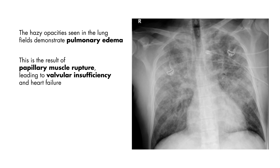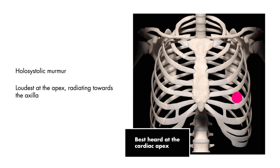Because of this rupture, the valve is not anchored and becomes insufficient. On auscultation of this patient's heart, you will hear a new holosystolic murmur loudest at the apex and radiating to the axilla, which is the classic description of mitral regurgitation.